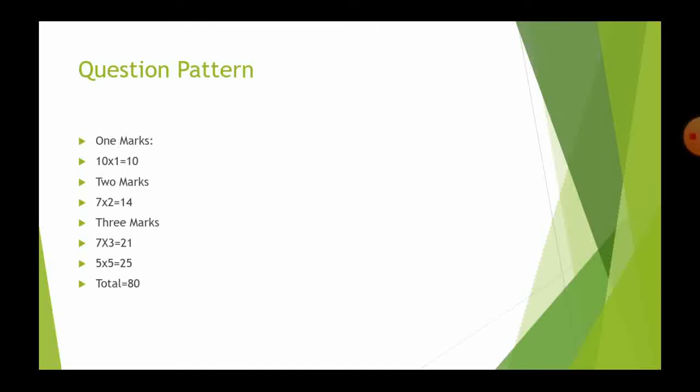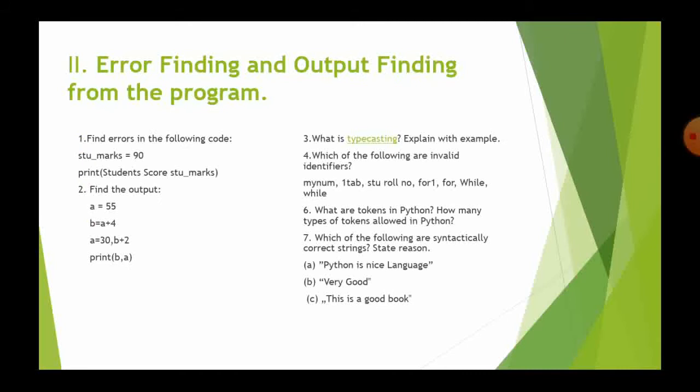Now you will see the question pattern of your paper. Section 1 has 10 one-mark questions, fully multiple choice. Section 2 has 7 two-mark questions based on error finding and output finding of programs. Section 3 has three-mark questions with output-based questions and some program writing. Section 4 has 5-mark questions where you have to write code for a given program.